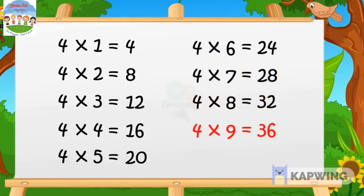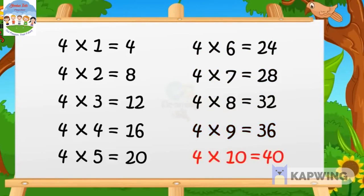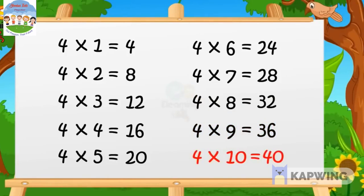4 nines are 36, 4 nines are 36. 4 tens are 40, 4 tens are 40.